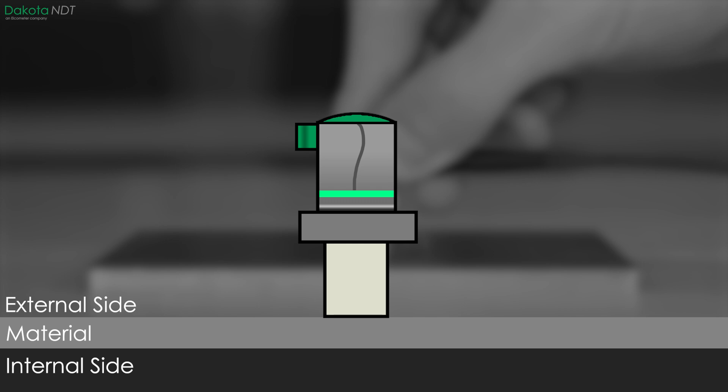Rather than calculating the time from pulse to echo, the gauge measures from interface to echo. The interface is when the pulse passes between the delay line and the material, and the echo is when the pulse hits the back wall of the material and returns to the transducer.